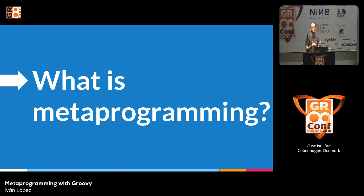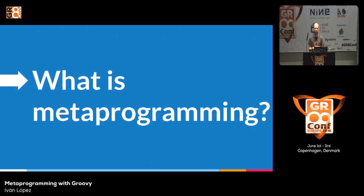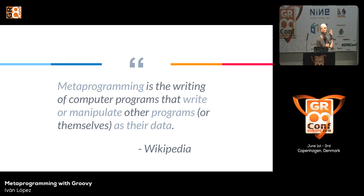But what really is metaprogramming? Imagine if we could add methods and behavior dynamically to our code based on its current state and the inputs the application receives. With this, we can make our code more flexible and be more creative and productive. According to Wikipedia: metaprogramming is the writing of computer programs that write or manipulate other programs or themselves as their data. The important part is 'as their data' — we write code that writes code.